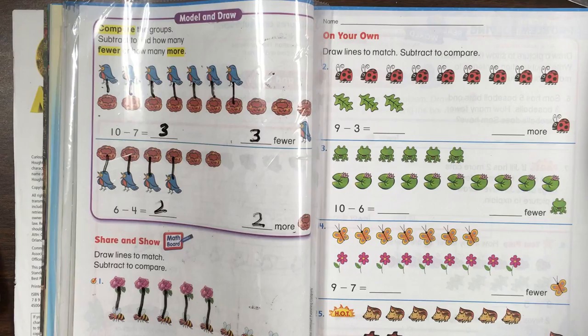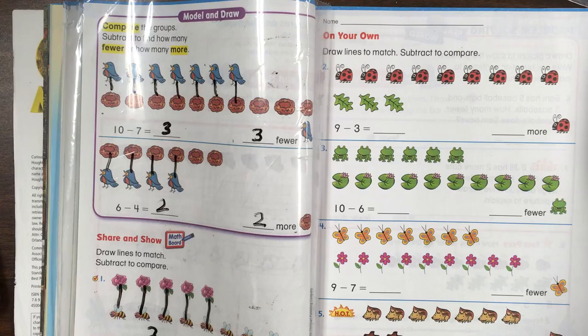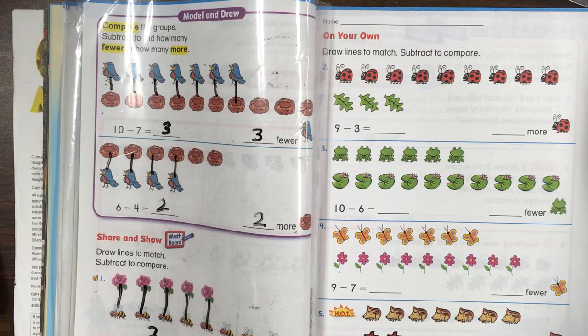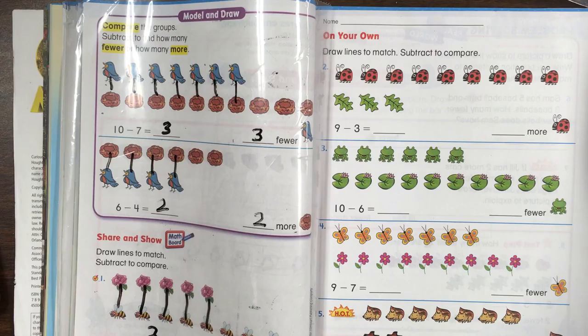How many are there missing? That's right. We're missing three flowers in order for there to be one for each. Eight minus five is three. The difference between the number of bees and the number of flowers is three.